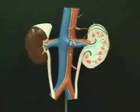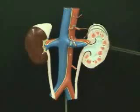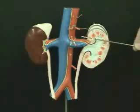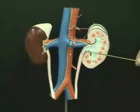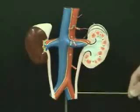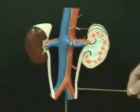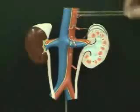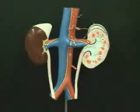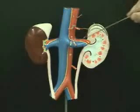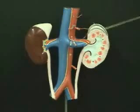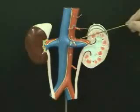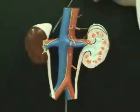For the renal system on this model, I want you to notice the kidneys, the position of the renal artery and the renal vein, and the position of the ureter. Now the left kidney is slightly higher than the right kidney, and the left kidney is closer to the abdominal aorta than is the right kidney, so the left renal artery should be longer than the right renal artery.